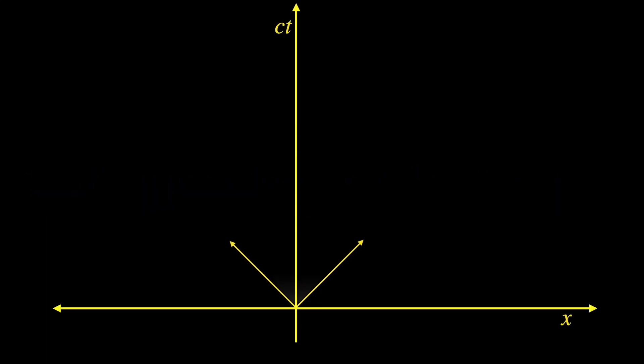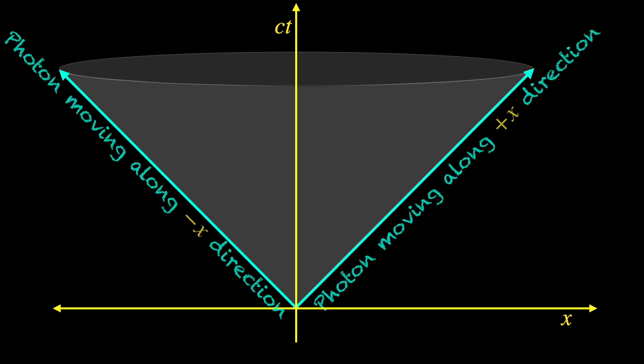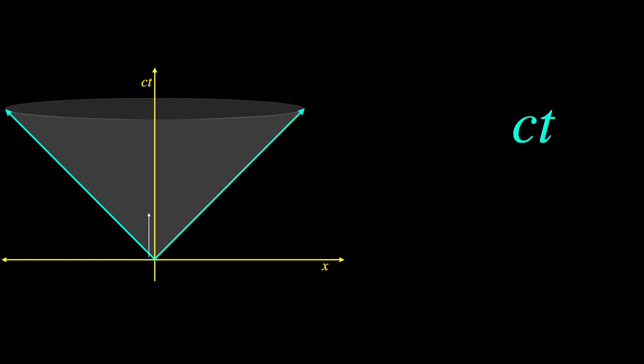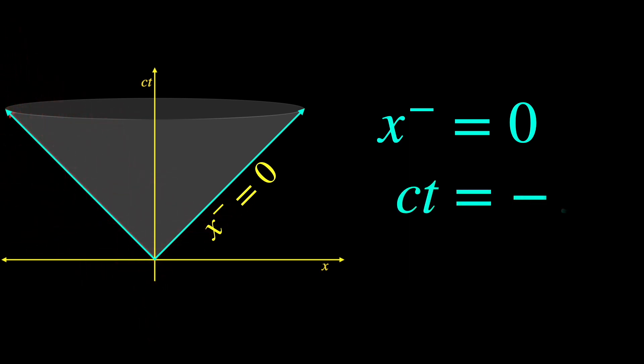In a spacetime diagram, consider the forward light cone drawn at the origin. Its two arms indicate the spacetime trajectories or world lines of photons emitted at the origin, one moving in the positive x direction and the other in the negative x direction. Since a photon takes a time interval t to travel a distance ct from the origin event, at every event point on the photon world line, for its motion along the positive x direction, x is equal to ct. In other words, we may say this world line is characterized by the equation ct minus x equals 0, or x minus equals 0. Similarly, the other arm of the light cone for photon moving in the negative x direction will correspond to the equation ct equals minus x, or ct plus x equals 0, or x plus equals 0.